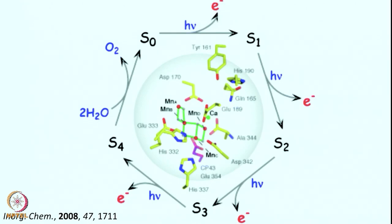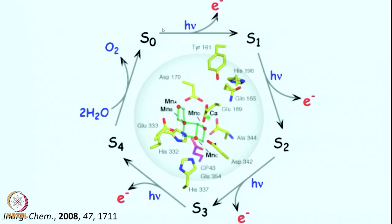Let us look at the electronic properties of these intermediates. Starting with S0 — the fully reduced form — all these intermediates have 4 manganese 1 calcium structure. From S0, the cluster is oxidized at each step, with each of these 4 steps dependent on light, but the final step — S4 converting to S0 — is not light dependent. This light-dependent step oxidizes the manganese core to give S1, oxidized by one electron. At every step, one electron oxidation is happening.